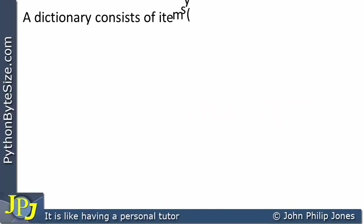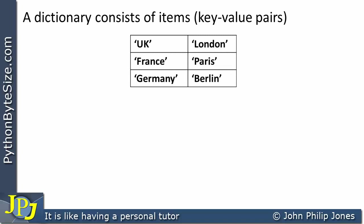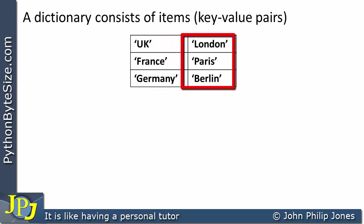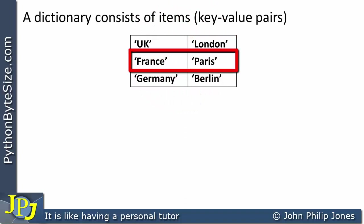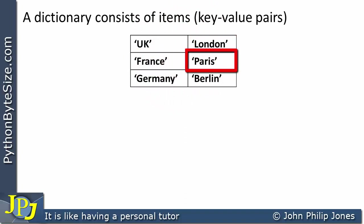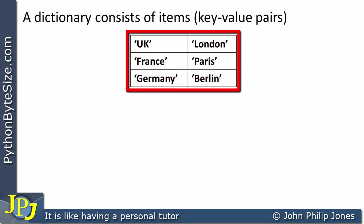A dictionary consists of items — key-value pairs. This diagram represents the relationship of these key-value pairs. The three items in this column represent the keys, and these represent the values. This is a key-value pair, and this is a key-value pair. You can see that these are strings and these are strings, so for this dictionary both the keys and the values are strings.